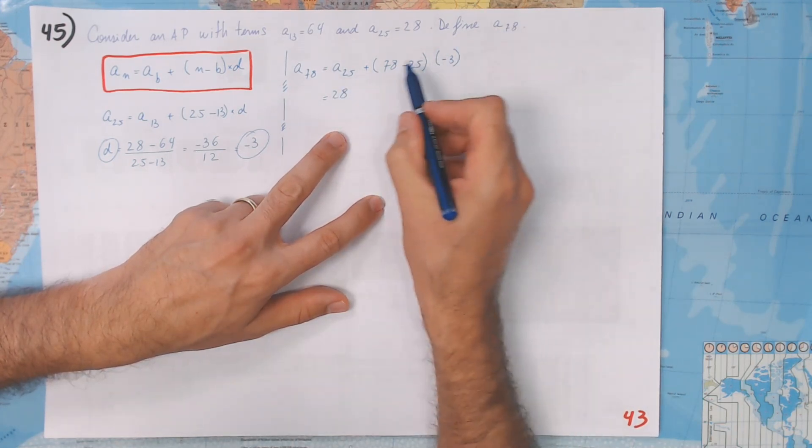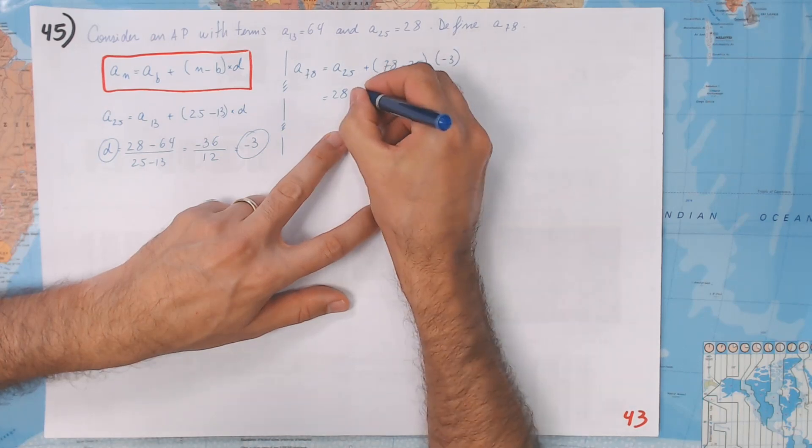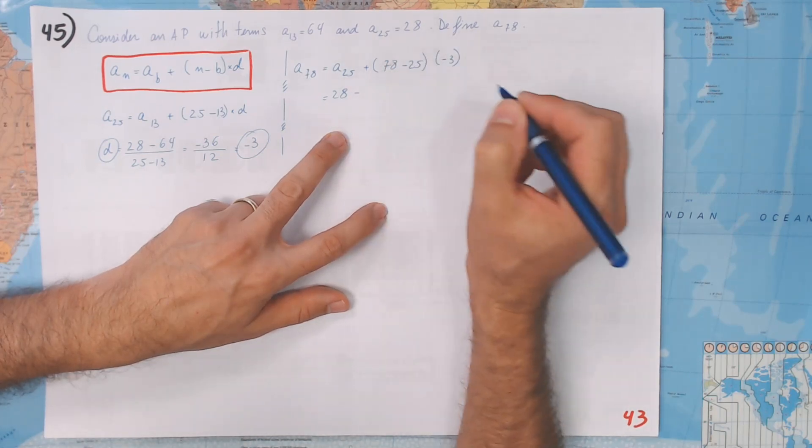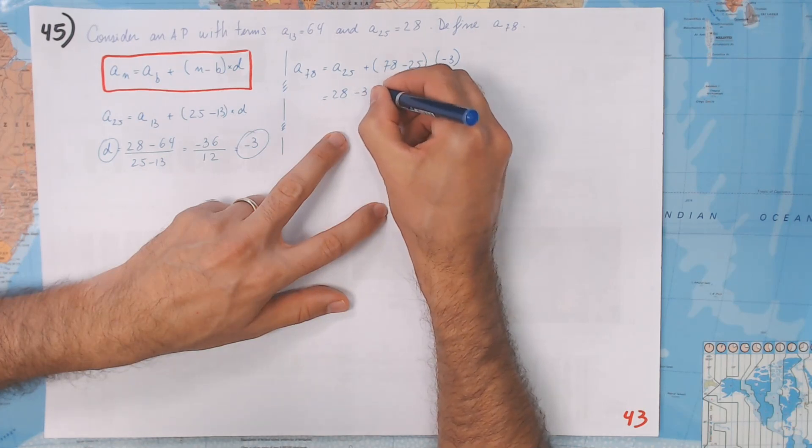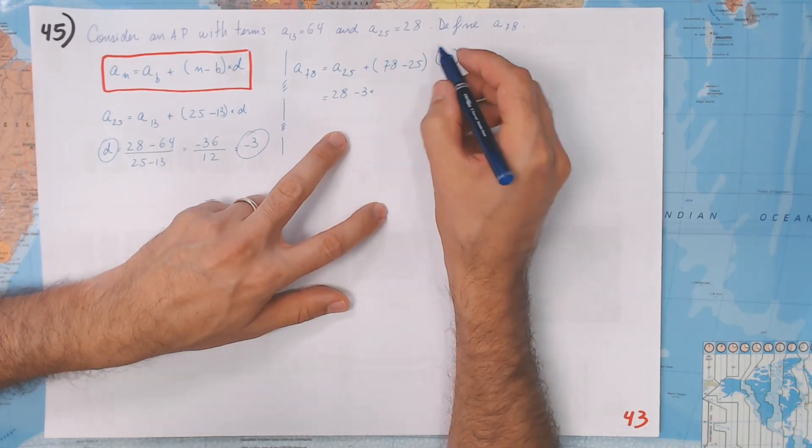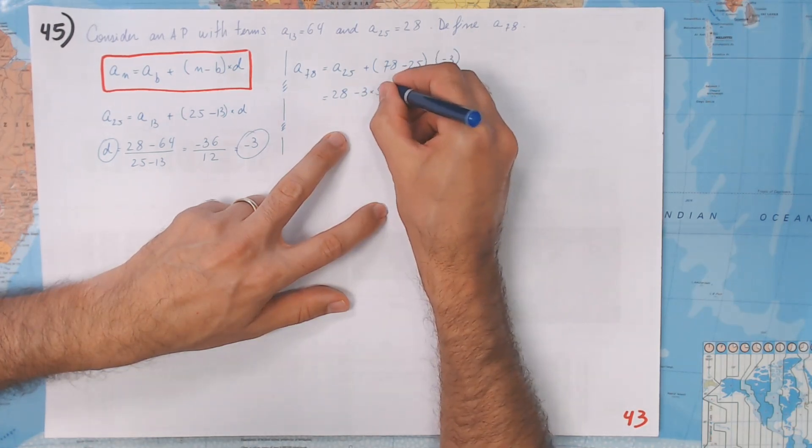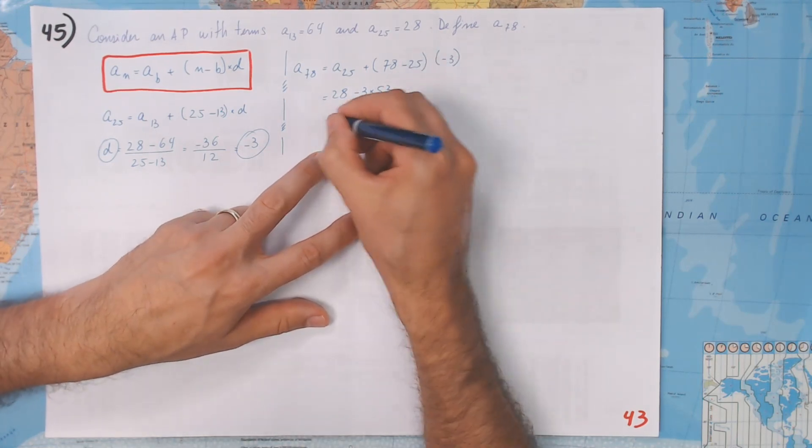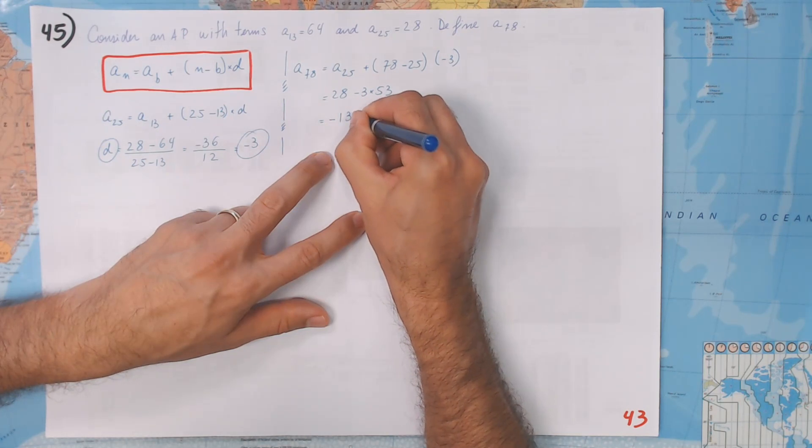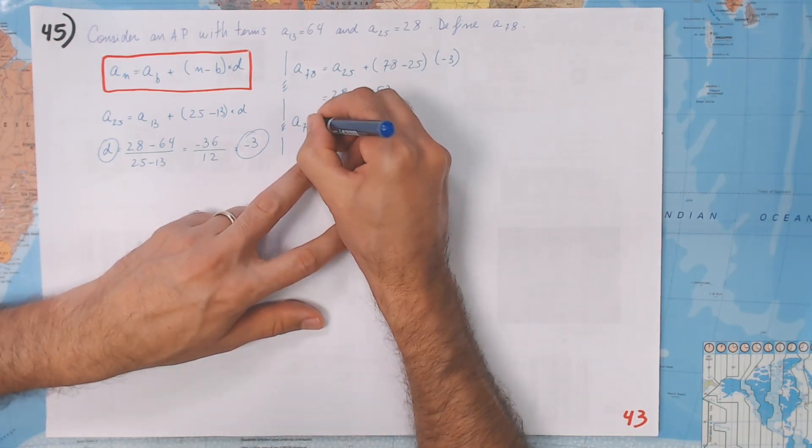This is going to be a positive with a negative, so it's going to be negative. Negative 3 times, in here we're going to have 53, and in the end we're going to have negative 131. So this is going to be our a₇₈.